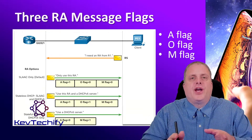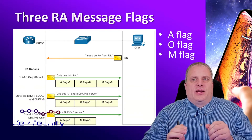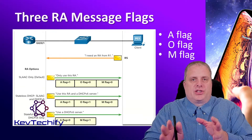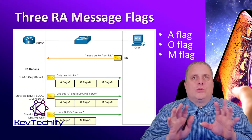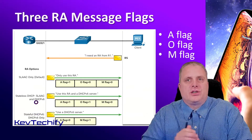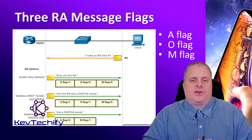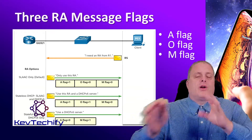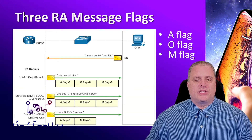The A flag, if set, says use automatic auto-configuration to set up your IP address. The O flag means there's additional information on a DHCPv6 server. So the A flag means generate your own global unicast address, and O means there's additional information available on another server. These three flags are typically all set in some sort of patterns.